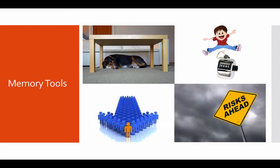On the bottom left we can see several people standing in formation with one person standing out in front. This shows that derivatives can also be standardized, and standardized contracts get sold on exchanges.